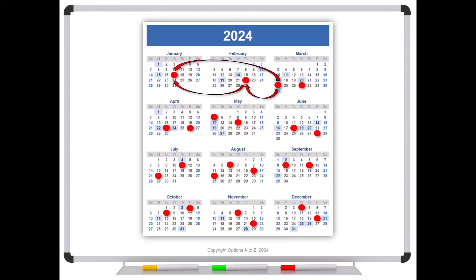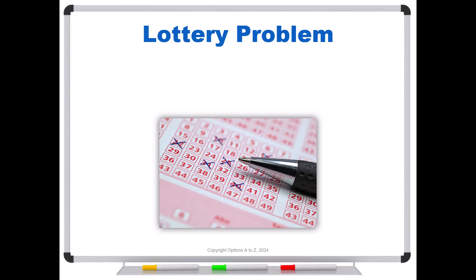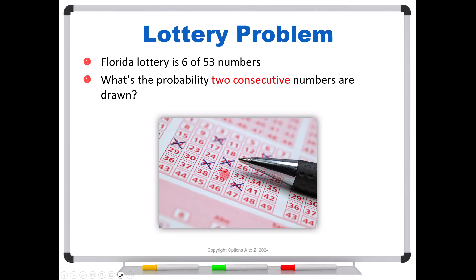Now, there's a similar problem that I like to show, and that is a lottery problem. Now, here in Florida, where I live, the lottery is six of 53 numbers. It used to be six of 49, and now it's six of 53, which is what I think most states are. And here's an interesting question. What's the probability that two consecutive numbers are drawn? And the reason this is a good question, if you look at the way that most people draw their numbers, such as in this graphic down here, what do they do? They tend to spread things apart. They can't imagine that you would get two consecutive numbers. It just seems like it's throwing the ticket away, but that's not possible.